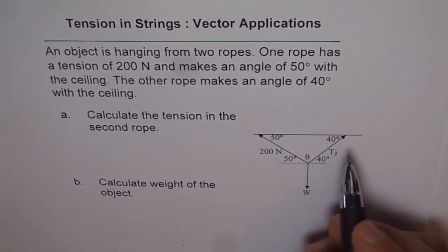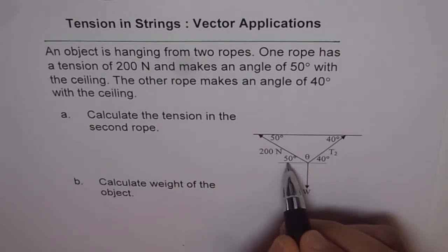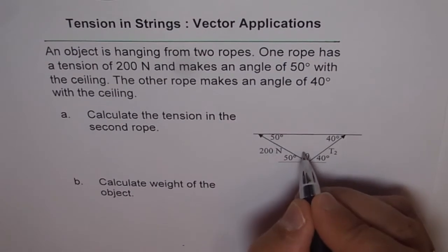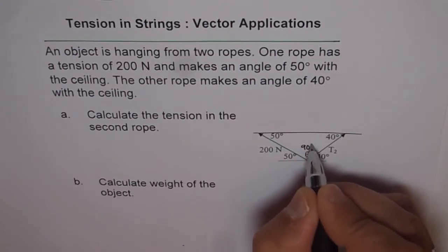The third will be, the total is 180. 50 plus 40 is 90, so the third angle is actually 90 degrees. We will write 90 degrees here.